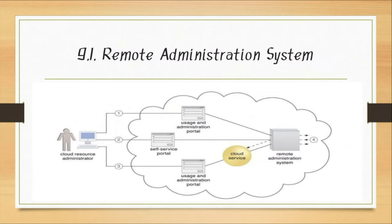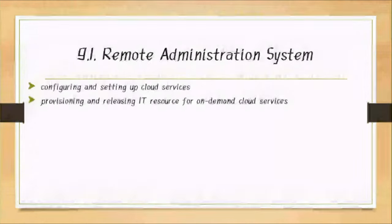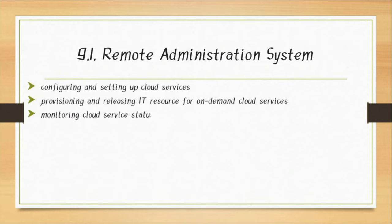The remote administrator system depends on several key functions. First: configuration and administrator settings — the number of cloud settings the remote administrator system depends on. Second: provisioning and releasing of IT resources for on-demand cloud services — whatever the demand, the remote administrator will work accordingly. Third: monitoring cloud service status, user activity, and performance — such as checking whether status is active or passive, how much data is used, and hardware performance.